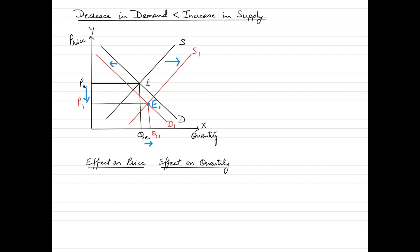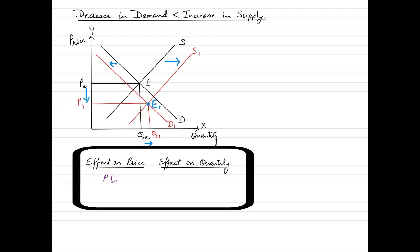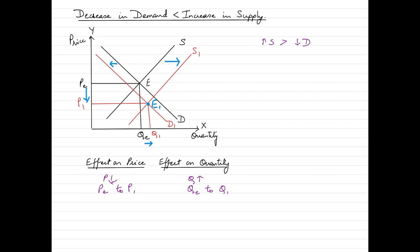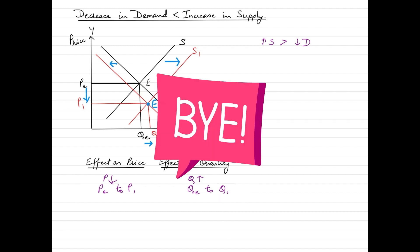To summarize this scenario: the price has gone down from Pe to P1, and quantity has increased from Qe to Q1. This happened because the increase in supply was greater than the decrease in demand. I hope you are now understanding these concepts very clearly. That's it for today's video — bye students, take care.